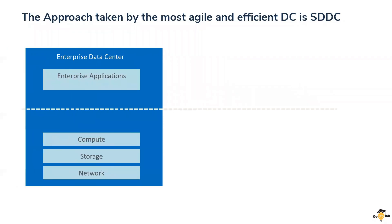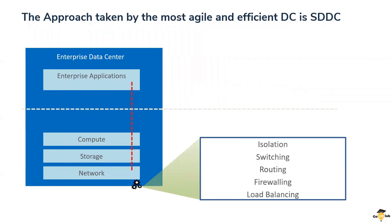Looking at this slide: in the early days, all enterprise applications were tightly coupled with the underlying storage, network, and compute hardware. For example, your switching, routing, firewall, and load balancing were directly dependent on the underlying network hardware — whether you were taking best-of-breed hardware from Cisco, Juniper, or Palo Alto for switching, routing, and firewall services. Our applications were tightly coupled with the underlying hardware, and we had a lot of vendor dependency issues.